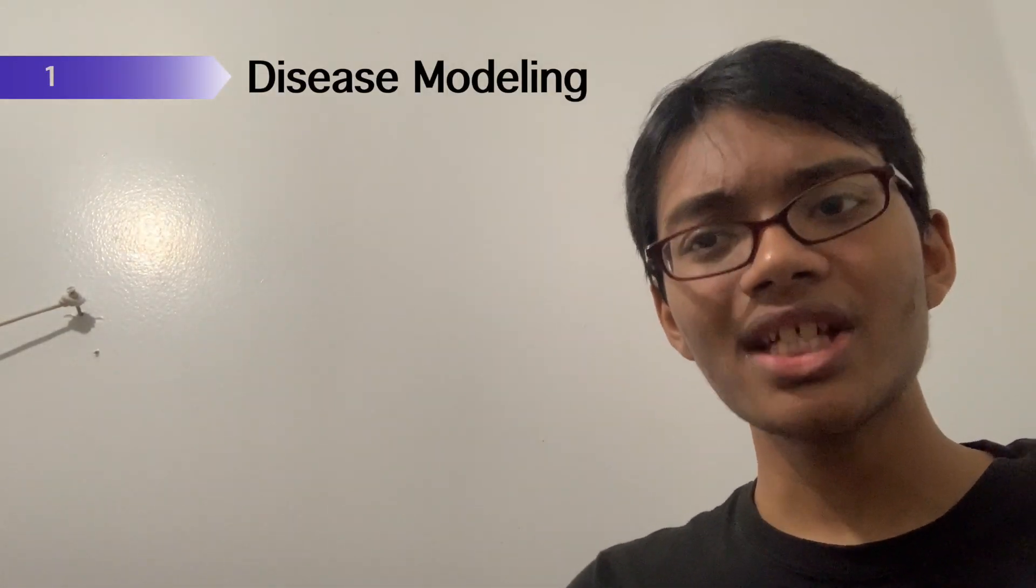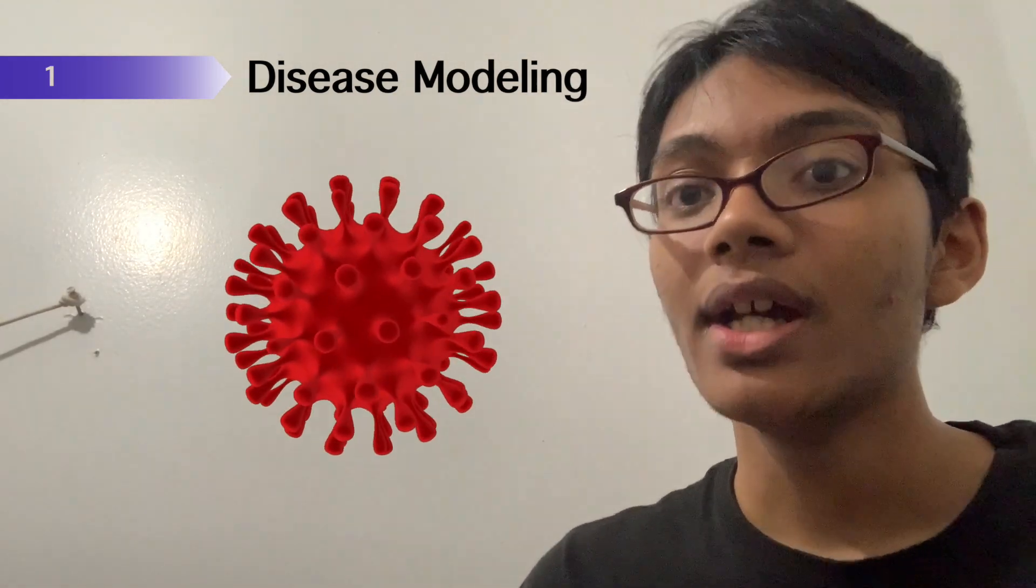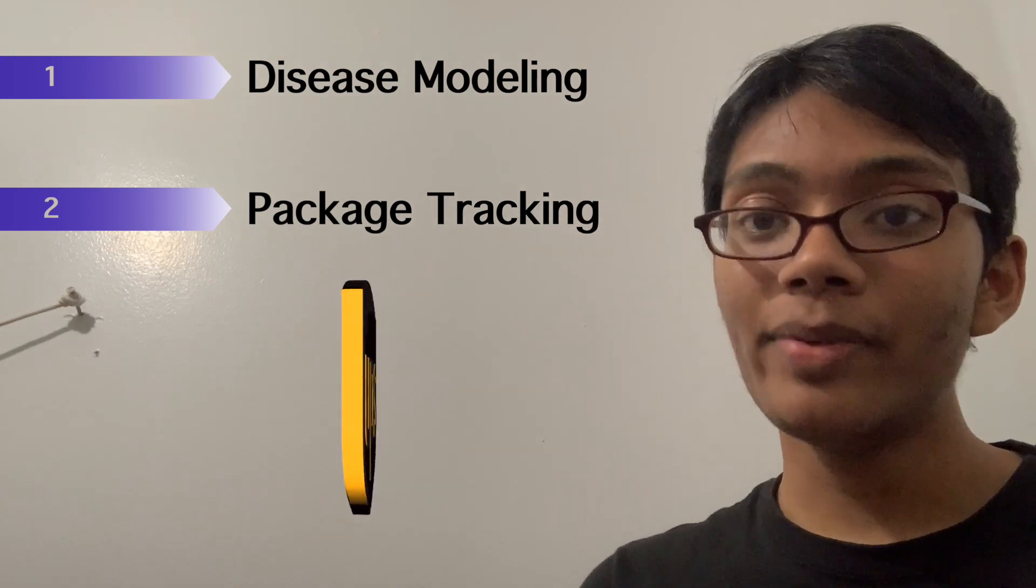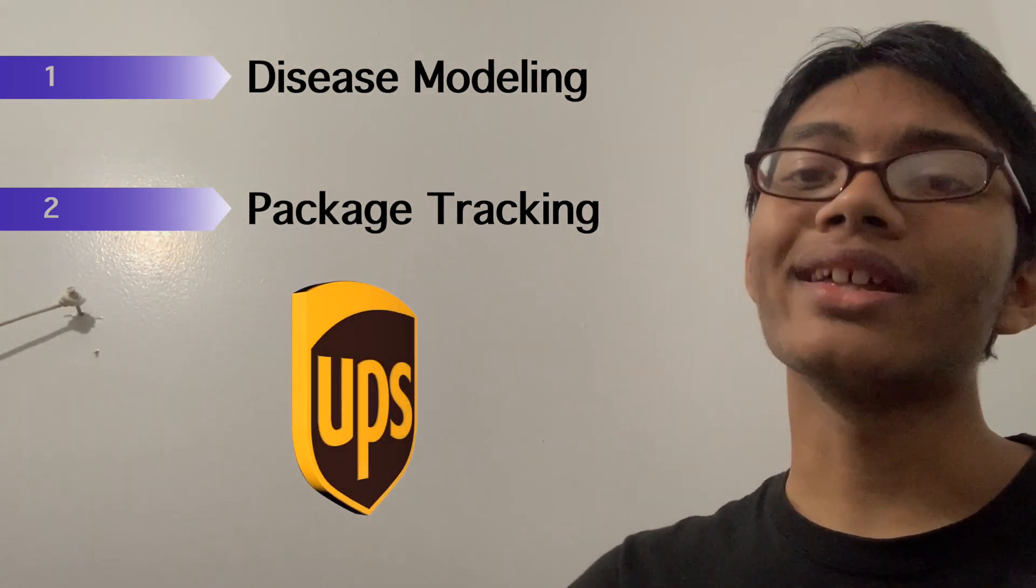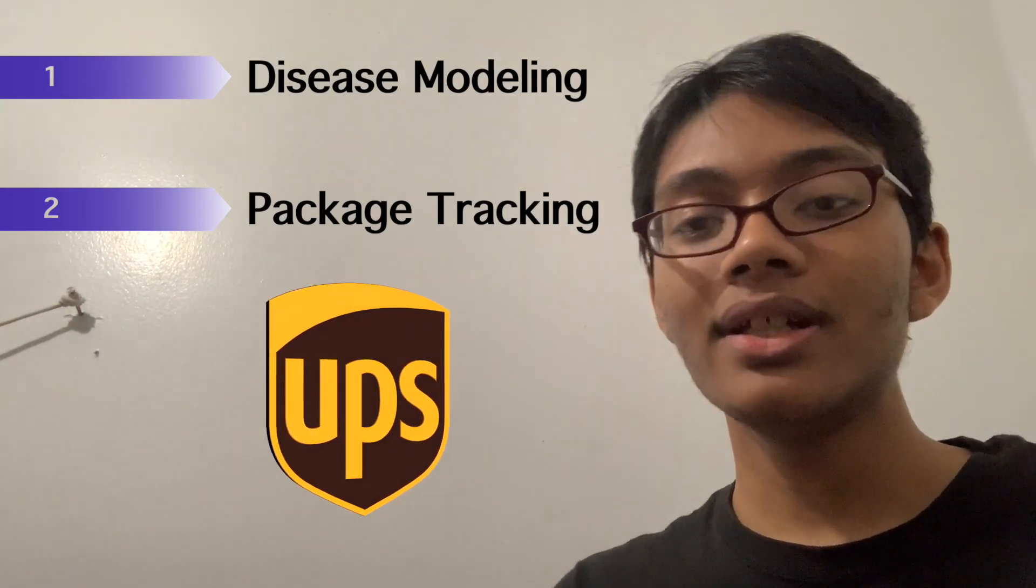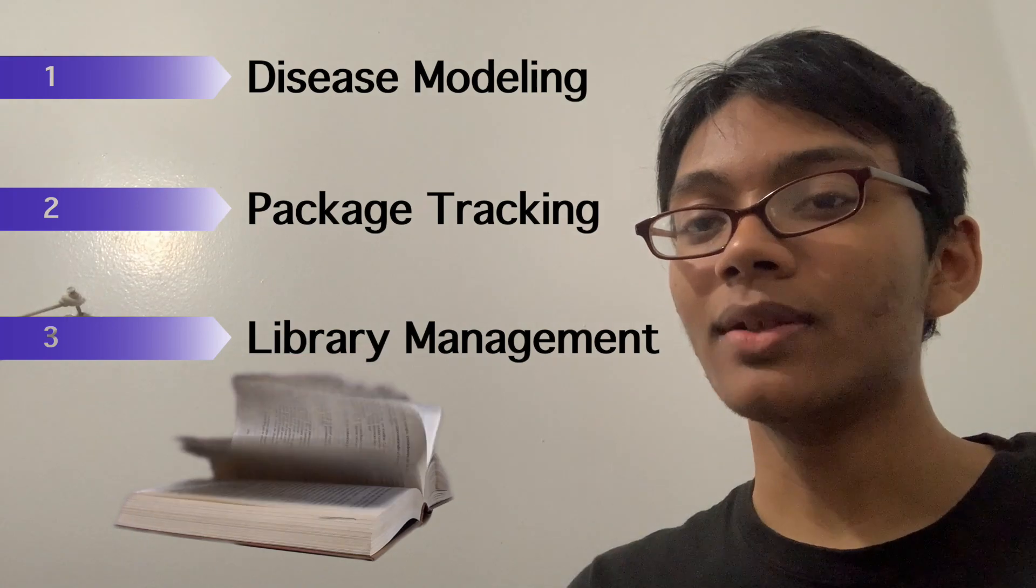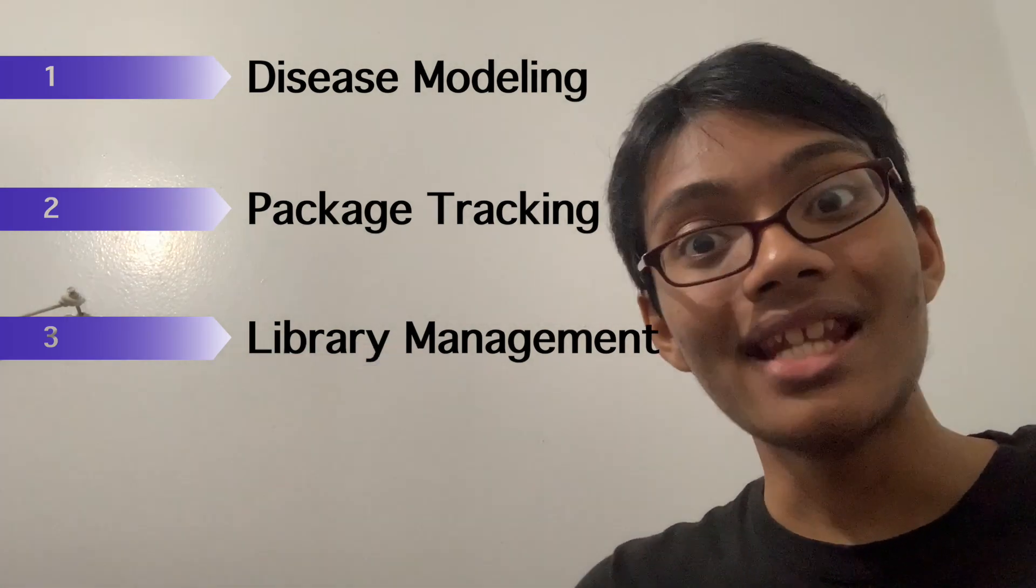Number one, mathematicians use statistics to track the spread of a disease like COVID throughout a community. Number two, truck drivers and UPS use statistics to track a package as it goes along its route. And finally, number three, the Library of Congress, a very specific example, uses statistics to track and store books in its national database.